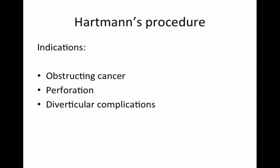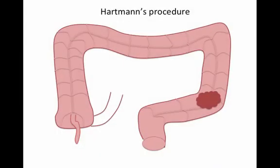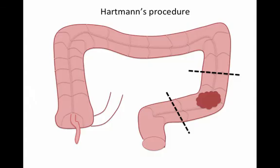Hartman's procedure is most commonly performed in the emergency setting for any pathology affecting the sigmoid or recto-sigmoid colon. Common indications would be an obstructing cancer, perforation secondary to either cancer or diverticular disease, or diverticular complications. A cancer and diverticular disease affecting the sigmoid colon, especially in the elderly population, can commonly present with either obstruction or perforation, leading to significant abdominal sepsis — and this would be the indication for Hartman's procedure.